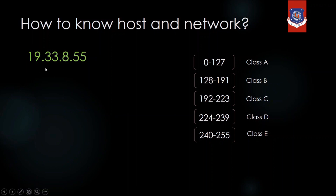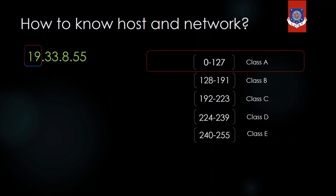For example, the IP address 19.33.8.55 belongs to Class A because the first octet is 19, which falls in the range 0 to 127. In a Class A IP address, the first octet represents the network — meaning 8 bits are for the network — and the remaining 24 bits represent the host.